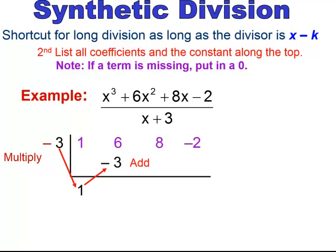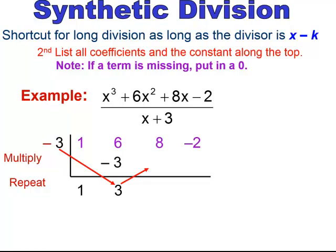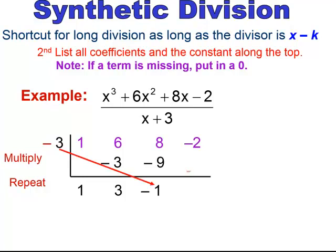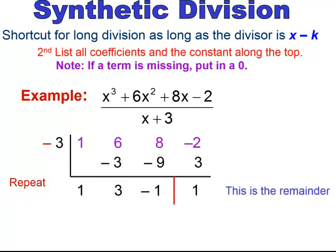Then you add down: 6 minus 3 gives you 3. Repeat — take that negative 3, multiply it to the 3, and put it in the next column. Negative 3 times 3 is negative 9. Add down: 8 minus 9 is negative 1. Continue until you have no more numbers. Negative 3 times negative 1 gives you positive 3. Add down: negative 2 plus 3 is positive 1. This last number is the remainder. If it's 0, there's no remainder, but here we have a remainder of 1.